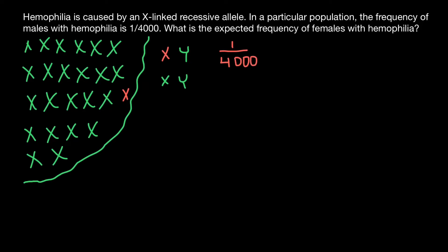So if we know that the frequency of males affected with this genetic disorder is 1 out of 4,000, this also tells us that the frequency of this allele in the population is 1 out of 4,000. And of course, this also tells us that males who are phenotypically normal would be 3,999 out of 4,000.